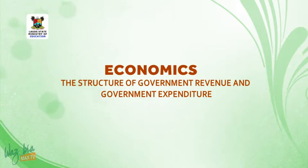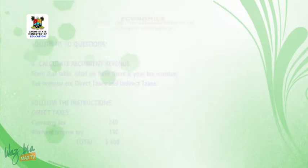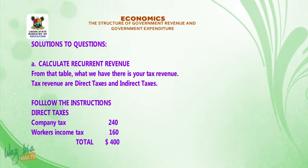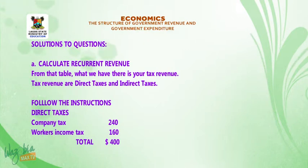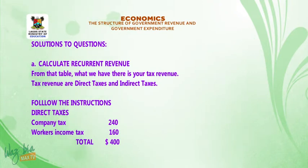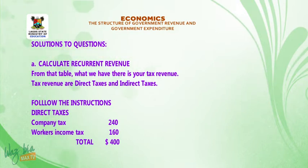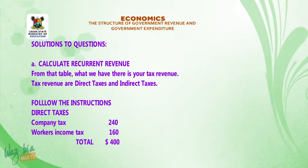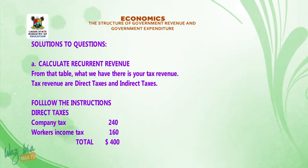Welcome back from the short break. We want to answer the questions given before the break. Question 1: Calculate recurrent revenue. Go back to your table and study it. Under tax revenue, we have direct taxes and indirect taxes. For direct taxes: company tax 240 plus workers' income tax 160 — total direct taxes = $400 million.